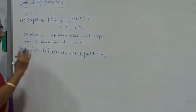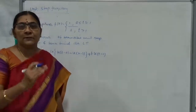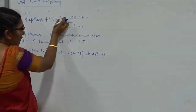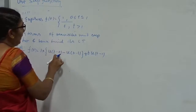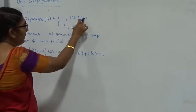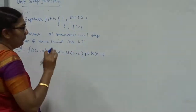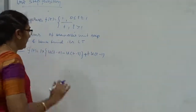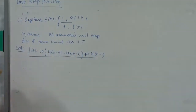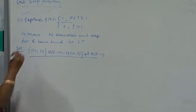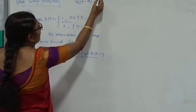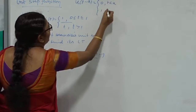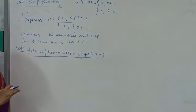So F of T is expressed as: [U of T minus 0 minus U of T minus 1] plus T into U of T minus 1. Here U of T minus A is our unit step function, which is 0 for T less than A and 1 for T greater than or equal to A. This is how we express F of T in terms of the Heaviside unit step function.